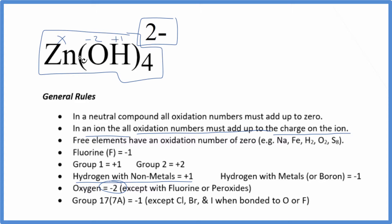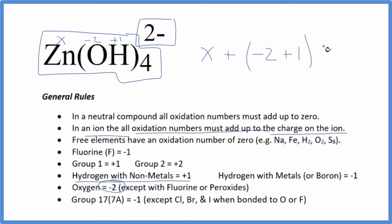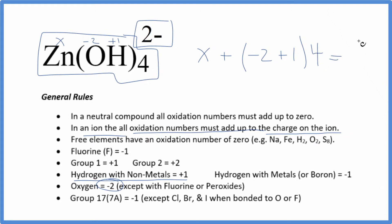So since all of these are going to add up to this charge here on the ion, we can just write an equation. We could say x for the zinc, and then let's just use parentheses, plus minus 2 plus 1 times the 4. That's going to equal this minus 2 here. So this is our equation.